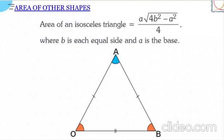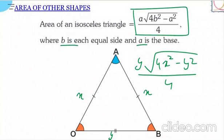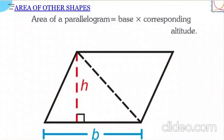Next is the isosceles triangle, where two sides are equal. If the two equal sides are x and the unequal base is y, then the area equals (y/4) × √(4x² − y²). Here b represents each of the equal sides and a is the base, so the formula becomes a × √(4b² − a²) / 4.